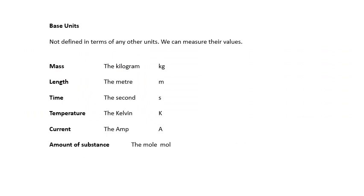The SI system has base units: the kilogram, meter, second, kelvin, amp, and the mole. There is another one, the candela, but you won't meet that in A-level physics. These are the base units, and they are basically not defined in terms of any other units. You can actually measure their values. A kilogram is the mass of something, length the meter is the mass of something. These are our base units.